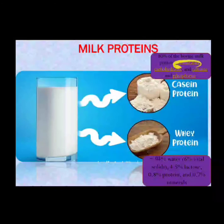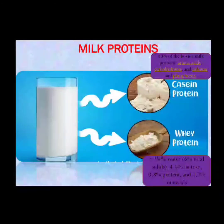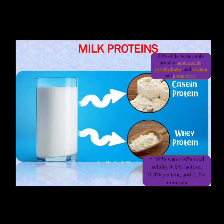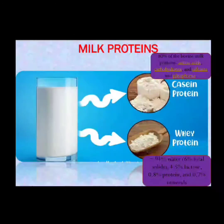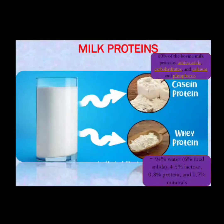Casein protein makes up 80 percent of bovine milk protein and is composed of amino acids, carbohydrates, calcium, and phosphorus. The whey protein, being the water that separates out, is made up of 94 percent water and 6 percent total solids. Those solids include 4.5 percent lactose, 0.8 percent protein, and 0.7 percent minerals.